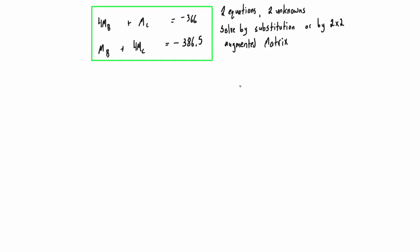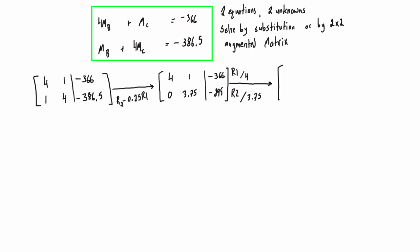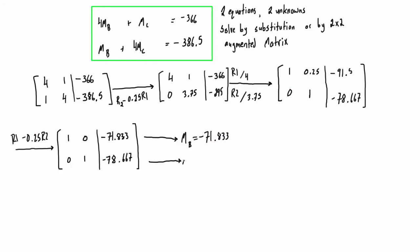So I'm just going to solve this using a 2x2 augmented matrix. You can use substitution if you want, but basically we're going to find that MB is equal to negative 71.833 and MC is equal to negative 78.667. We already knew from before that MA was going to be equal to 0 and also MD was going to be 0 because those are just at the ends of spans.